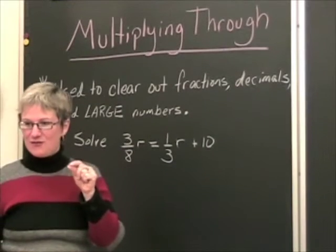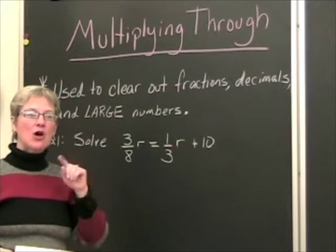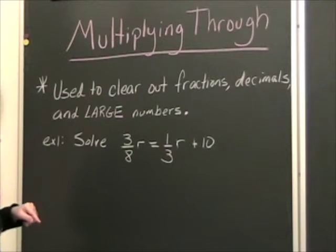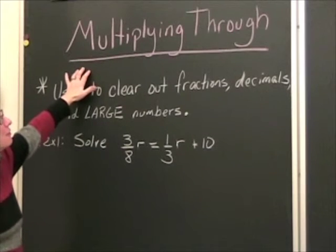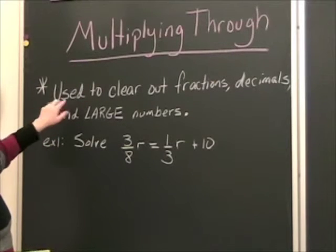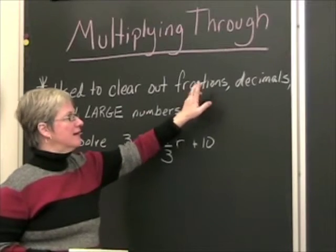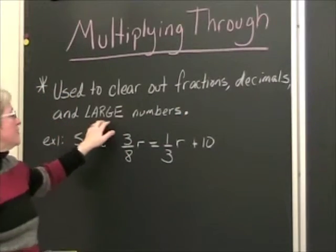A technique for solving really ugly math problems is called multiplying through. It's an algebraic trick that will help us clear out ugly fractions, ugly decimals, and also help us clear out really large numbers.